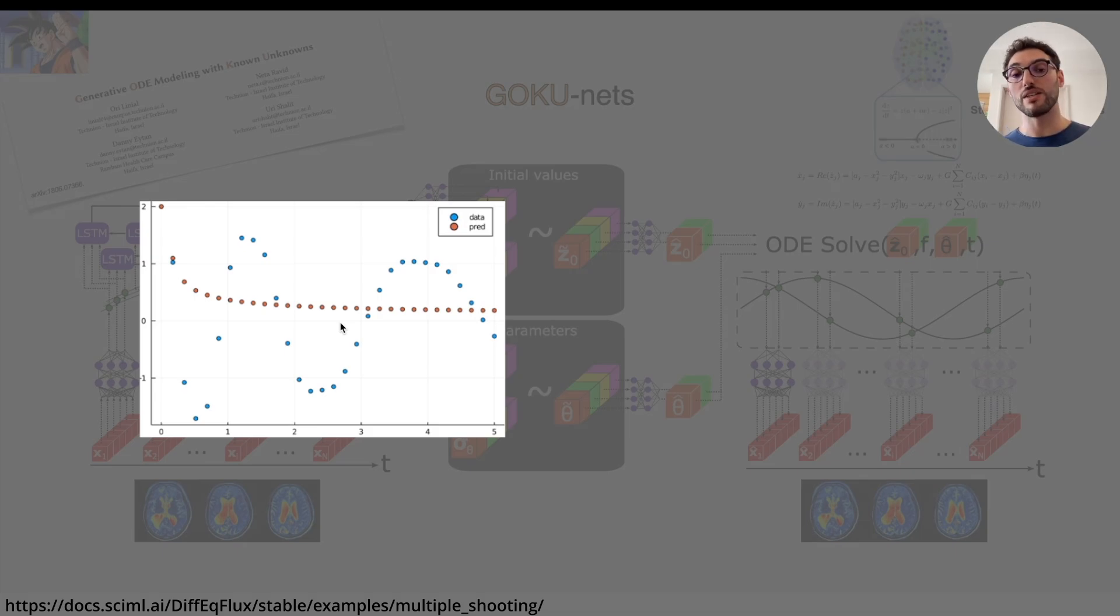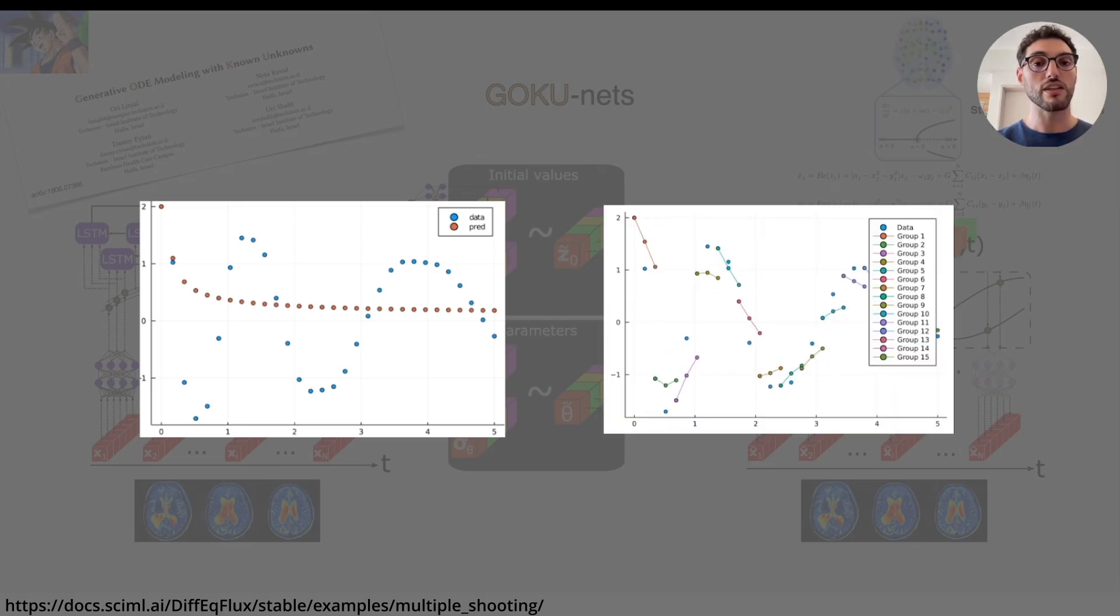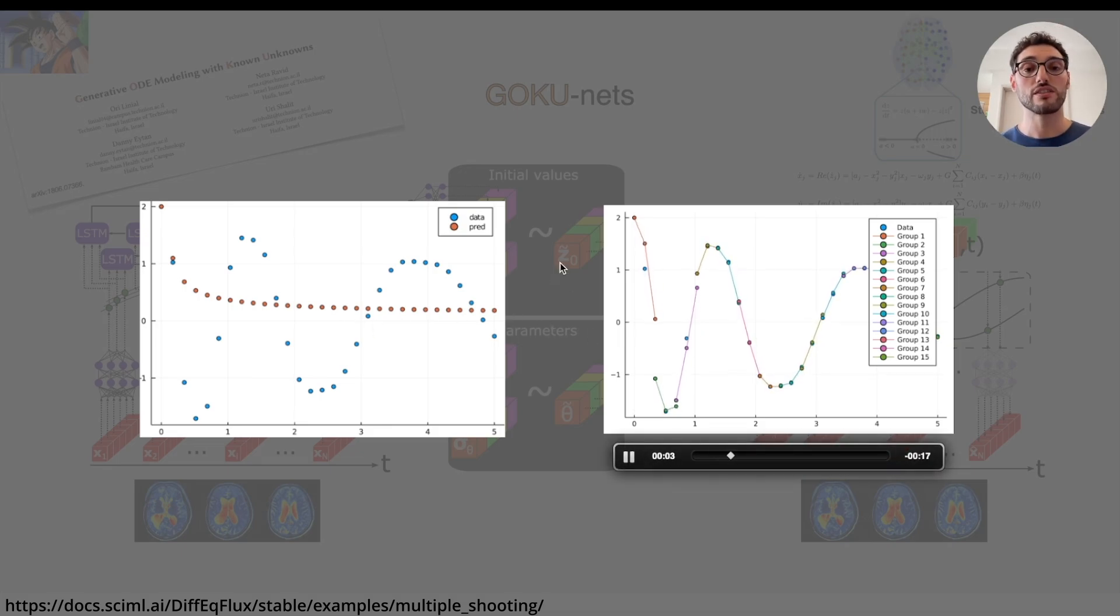One way to overcome this is by using a method that is well established in the system identification and control fields called multiple shooting, which consists of splitting the time span into multiple windows, solving for each of them in parallel, and then trying to impose some continuity between the windows. This was already implemented for neural ODEs, but we extended it for latent state models where you don't have access to the ground truth initial conditions because the differential equations occur in the latent space.